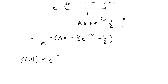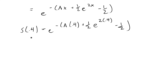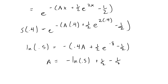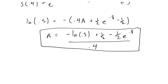So S(0.4) = e to the negative (0.4a + (1/2)e^(0.8) − 1/2). In the next step I plug in S(0.4) = 0.5 and take the natural log of both sides to get rid of e. That gives ln(0.5) = −0.4a + (1/2)e^0.8 − 1/2. Solving for a: a = (−ln(0.5) + 1/2 − (1/2)e^0.8) / 0.4. This is our final answer, and a is approximately equal to 0.2009.